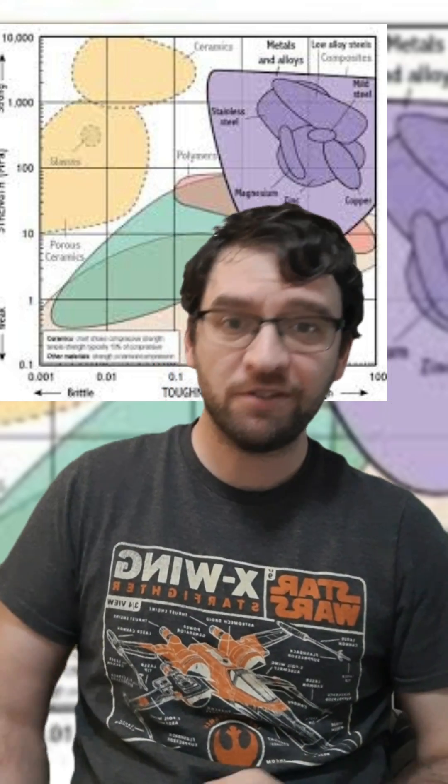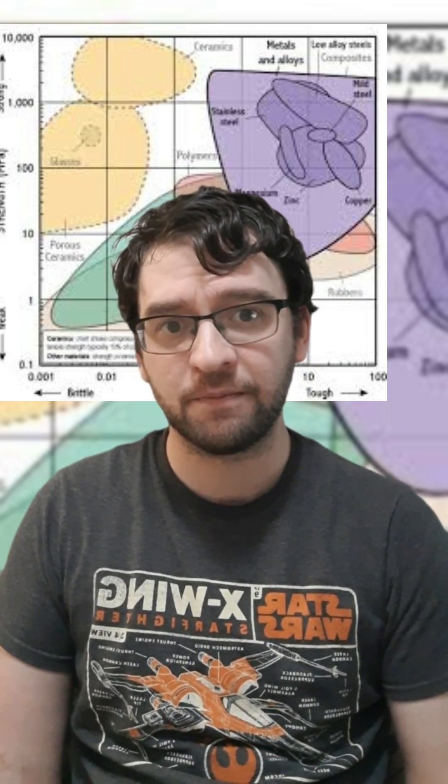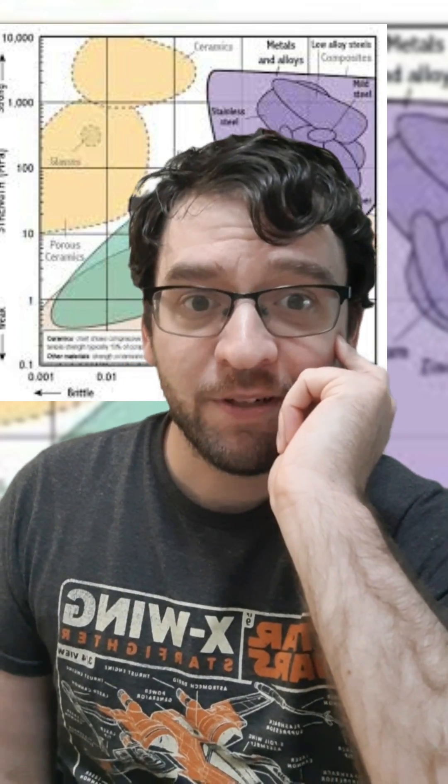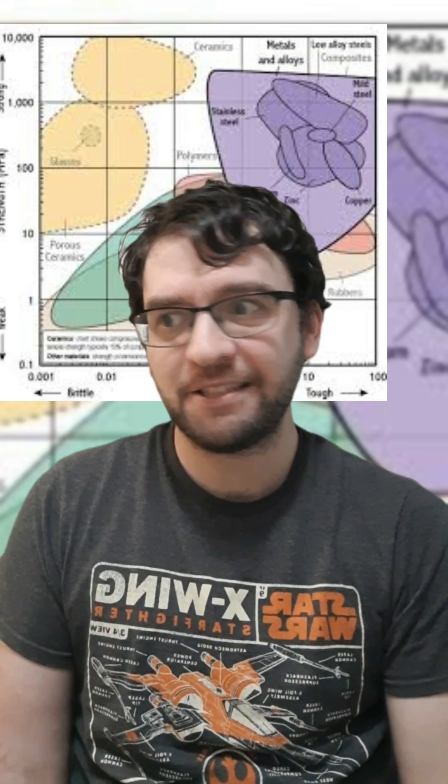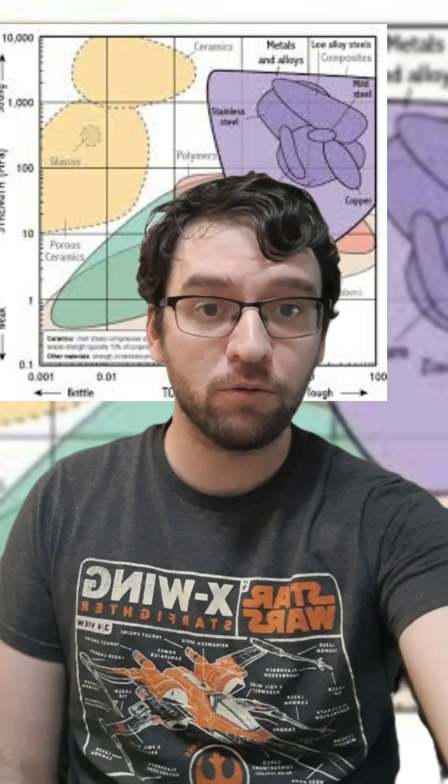So that's why we use steel for swords and a ton of other things. Iron and carbon are really abundant on Earth, and we can form steel with a level of heat that's pretty easily achievable.